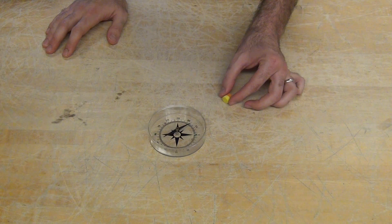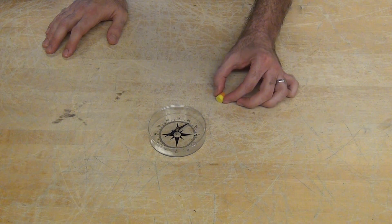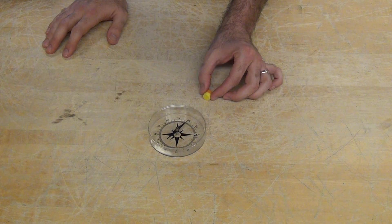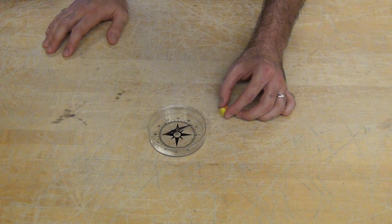If we have another magnet nearby, or a ferrous material, that might vary the local magnetic field, so it's not just that of the earth, and change which direction our compass is pointing.